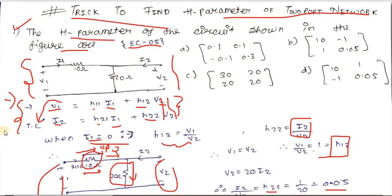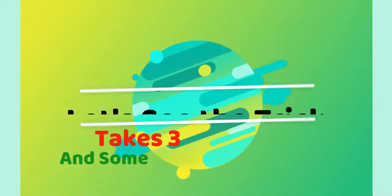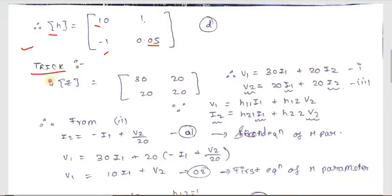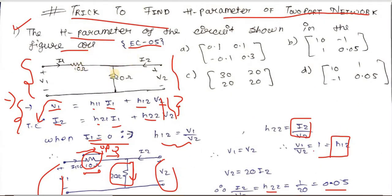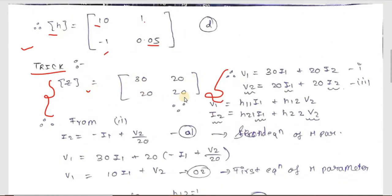The traditional way takes a lot of time. The trick is to first find the Z-parameter, and from the Z-parameter equations we can get the h-parameter easily. This network is a T-network with a 10 Ω series arm, a 20 Ω series arm, and a 0 Ω shunt. Using the Z-parameter trick for a T-network, the Z matrix is [30, 20; 20, 20] Ω.